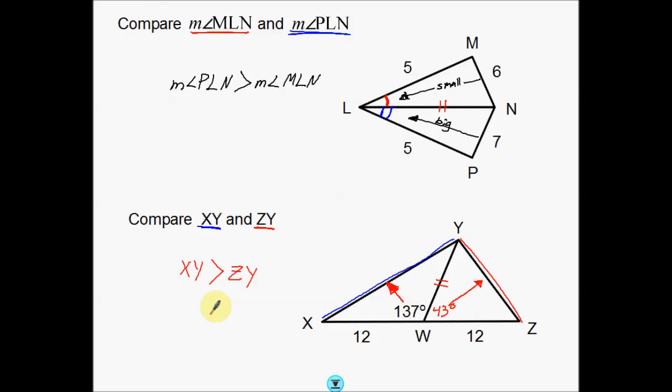Again, you've got to have evidence — you can't just say willy nilly that one side is bigger because you think so. You have to have some evidence to that. That's it for the hinge theorem and the converse of the hinge theorem. Thank you for watching and we'll see you next time.